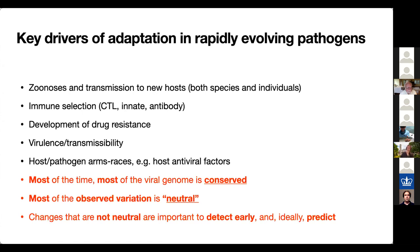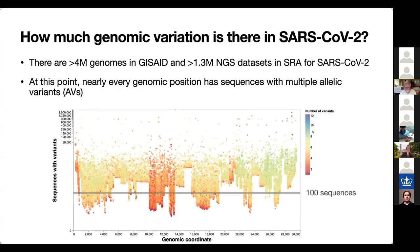The key points I would like to emphasize is that most of the time, despite all of this, most of the viral genome is conserved. Most of the observed variation you see is expected to be neutral, and the changes that are not neutral are few, but important to detect early and ideally to predict. Because we have over 4 million genomic sequences in GISAID and rapidly accumulating over 1.3 million deep sequencing data sets in the sequence read archive for SARS-CoV-2, nearly every genomic position has sequences with multiple allelic variants. If you want to look at variants, you can find almost every single imaginable nucleotide mutation already sampled.